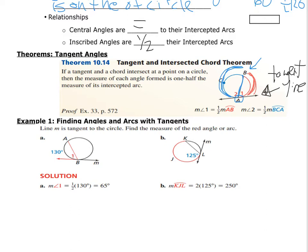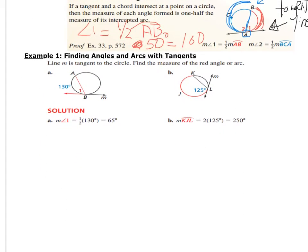For example, angle one equals one half of arc AB. If angle one equals 50 degrees, then arc AB must be 100 degrees — because the arc is always double the angle. So to go from angle to arc, multiply by two; to go from arc to angle, divide by two.